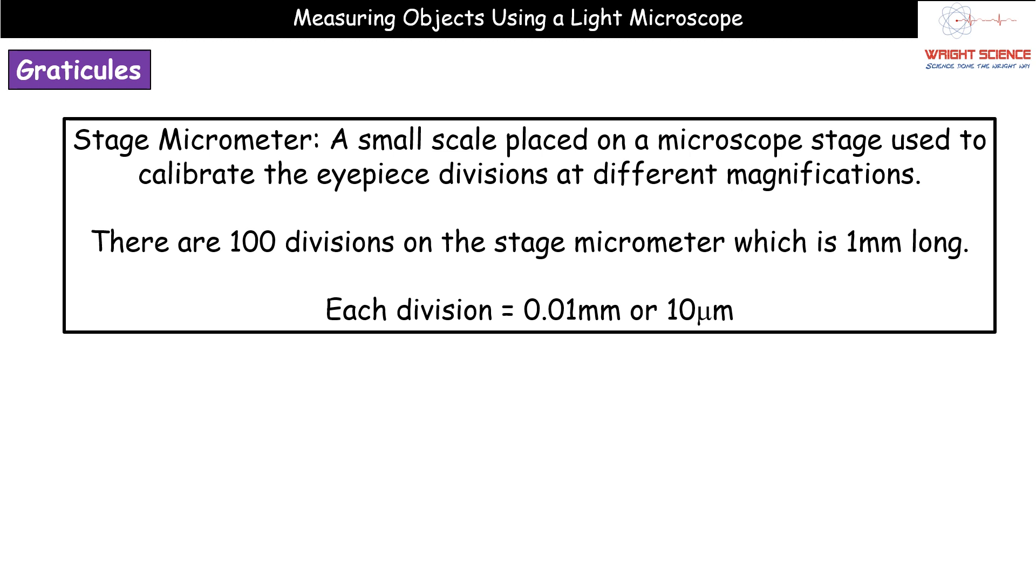So the stage micrometer itself has a hundred divisions on it and the whole scale is one millimeter long. So from one end of it to the other is just one millimeter. And between those two sides of our scale we have 100 little divisions. So quite simply we can do a nice little calculation. One millimeter divided by 100 tells us that each of the little divisions is 0.01 millimeters. If we wanted to convert 0.01 millimeters into micrometers we times by 1000. So each division is 10 micrometers.